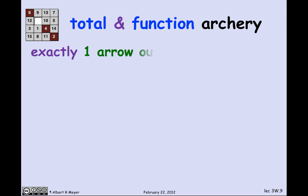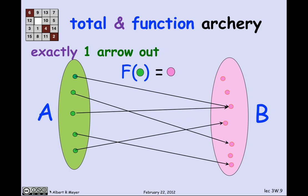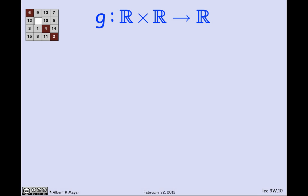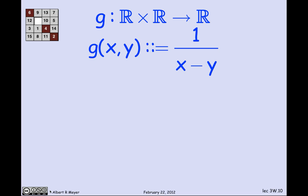Total and function means there's exactly one arrow out, which is probably the most familiar case of functions. In lots of fields, it's assumed that functions are total. But the truth is they often are not total, and people aren't careful about it. Here's a function g that takes a pair of reals and returns a real — it maps the real plane into the real line — and its definition is g of x, y equals 1 over x minus y.